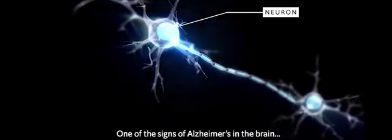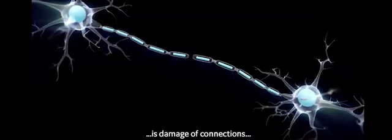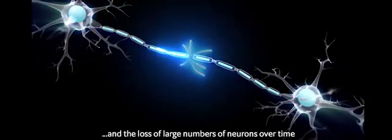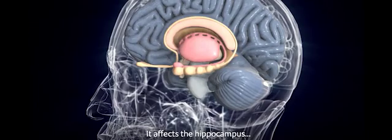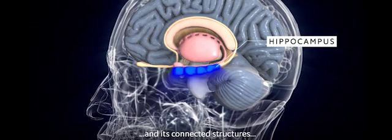One of the signs of Alzheimer's in the brain is damage of connections and the loss of large numbers of neurons over time. It affects the hippocampus and its connected structures, making it harder to form new memories or learn new information.